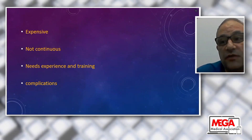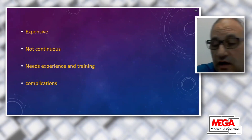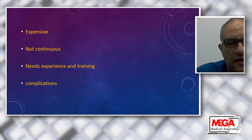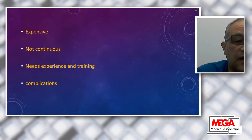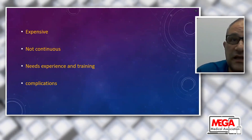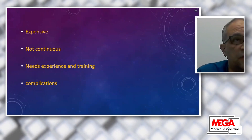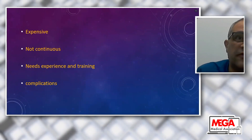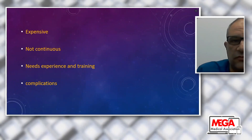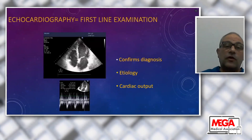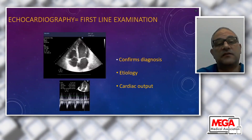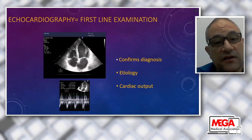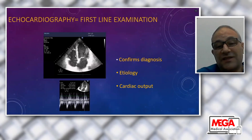Continuous forms of transesophageal echo are evolving, but echo is operator-dependent, requires training, and transesophageal echo has its own complications including esophageal perforation, airway trauma, esophageal trauma, and gastric offset. Despite its complications, echocardiography is our first-line advanced hemodynamic monitoring tool. It confirms whether the hemodynamic problem is cardiac in origin and identifies the etiology—whether left-sided or right-sided failure.